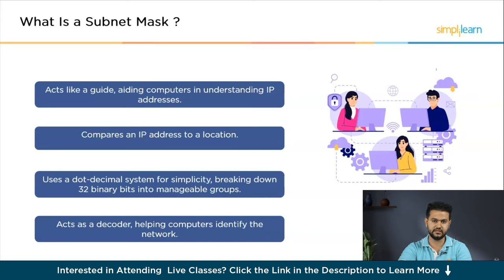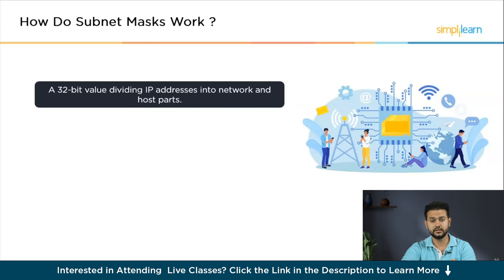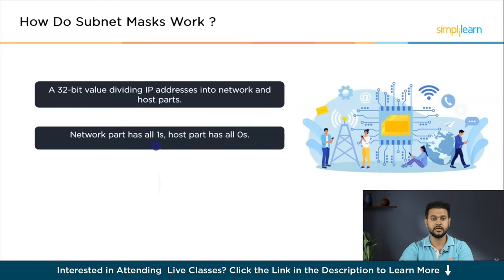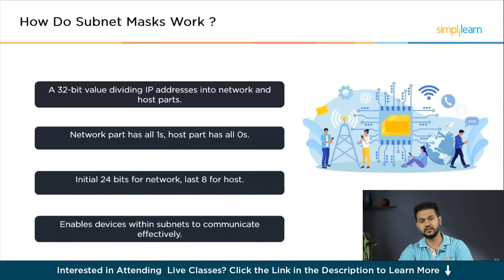It makes communication in networks easier by organizing addresses in a way that devices can understand. A subnet mask is a 32-bit numerical value that divides an IP address into a distinct network and host address. In the subnet mask, the network part is represented by all ones while the host part consists of all zeros. For instance, a subnet mask like 255.255.255.0 indicates that the initial 24 bits pertain to the network, leaving 8 bits for the host. This subnet mask facilitates communication among devices within a subnet, which functions as a smaller network within a larger network. Subnetting, achieved through the subnet mask, minimizes broadcast traffic, enhancing overall network efficiency and security.